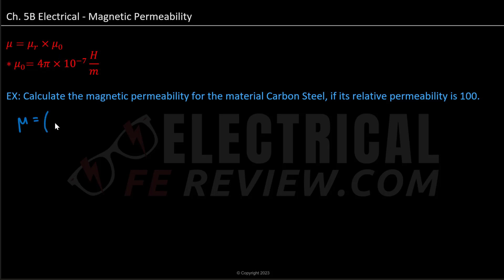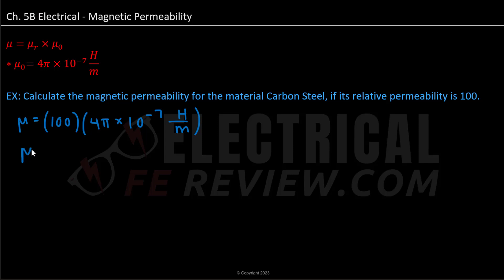Our relative permeability is given to be 100, and this is unitless because it is a ratio. We multiply this by 4π × 10⁻⁷ with units of Henrys per meter. When we multiply the two, our magnetic permeability is equal to 1.26 × 10⁻⁴ Henrys per meter.